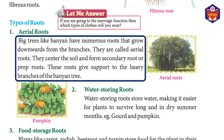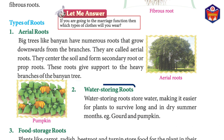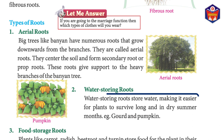Types of roots — one: aerial roots. Big trees like banyan have numerous roots that grow downwards from the branches. They are called aerial roots. They enter the soil and form secondary roots, also called prop roots. These roots give support to the heavy branches of the banyan tree.